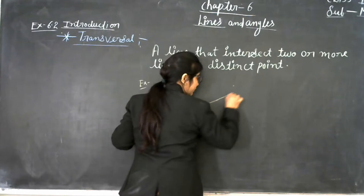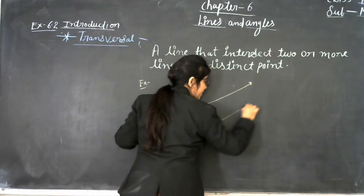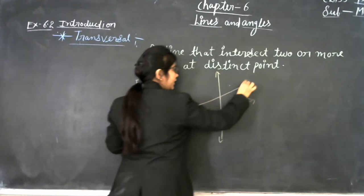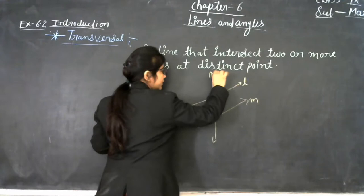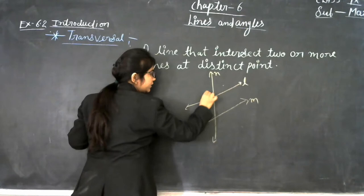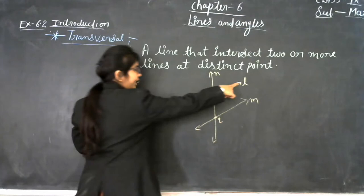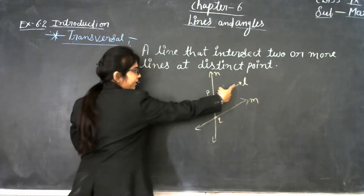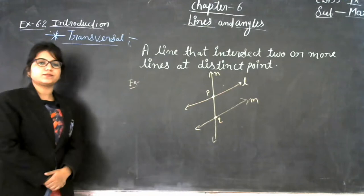Here you can see line L and line M. This line intersects another line at distinct points — point P and point Q. That is called the transversal. Line L intersects lines M at two points P and Q, so L is the transversal.